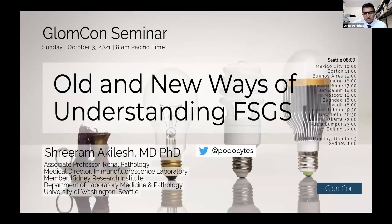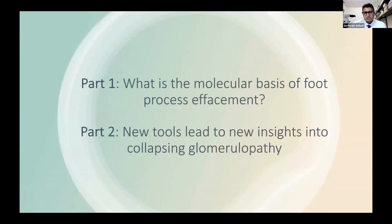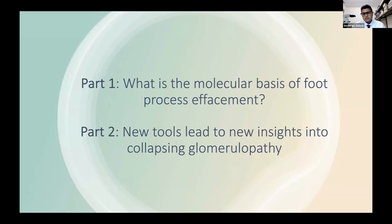Today what I thought I would do is talk about a couple of stories. One is using a classical or forward genetic approach to really try to understand what the molecular basis of the process of foot process effacement is. This is clearly a pathologic finding that we see in several diseases that present with nephrotic range proteinuria, so I was curious what the common molecular mechanism is that unites this presentation for all these disease processes. In the second half, I will discuss some more recent insights after providing some historical perspective on collapsing glomerulopathy, a kind of severe variant of FSGS.